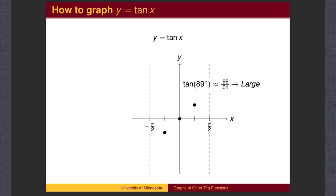The graph approaches an asymptote at pi over 2, growing very large and positive, so the graph is going up to infinity.